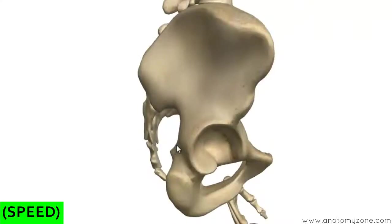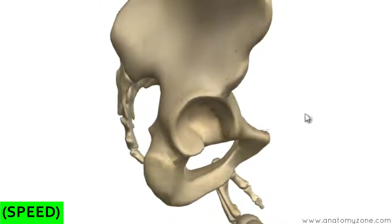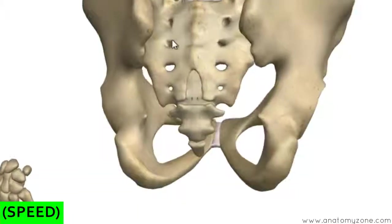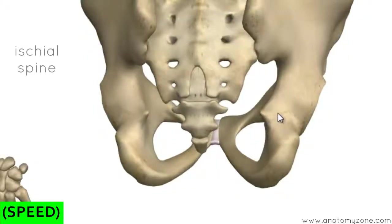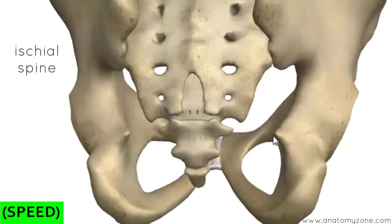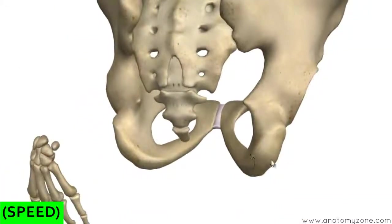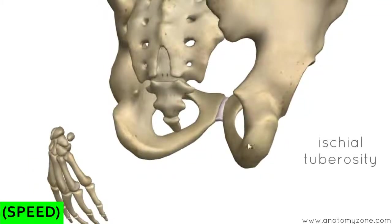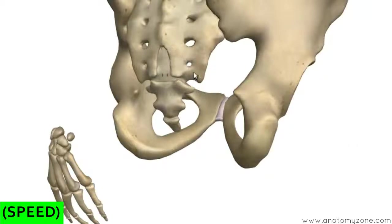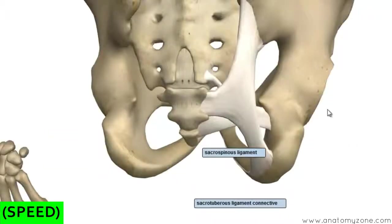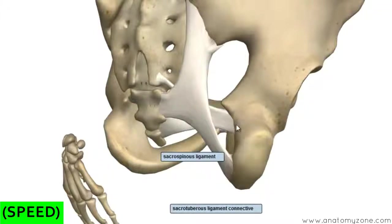Next is the ischium, which lies inferiorly and posteriorly. I mentioned the ischial spine — looking from a posterior view of the pelvis, you've got the sacrum, the greater sciatic notch, and the ischial spine. There are two important ligaments here: the sacrospinous ligament and the sacrotuberous ligament. At the bottom of the ischium is the ischial tuberosity. The sacrospinous ligament runs from the sacrum to the ischial spine, and the sacrotuberous ligament runs from the sacrum to the ischial tuberosity. Above the ischial spine is the greater sciatic foramen, and below is the lesser sciatic foramen.